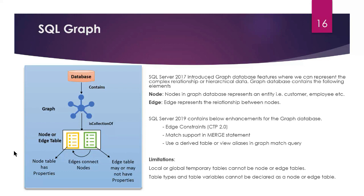The last topic for today is SQL Graph. On the left-hand side you can see a high-level picture of how it functions. A graph database contains a collection of node tables and edge tables. Node tables have properties, and edges connect the nodes. Edge tables may or may not have properties.